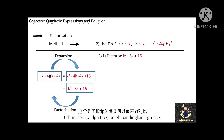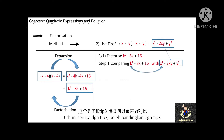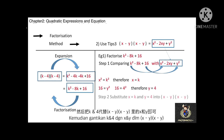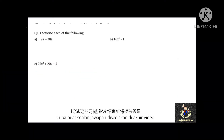Next, factorize k squared minus 8k plus 16. This algebraic expression is similar to Tips 3, so we use Tips 3 to perform the factorization. Doing the same comparison, we find x equals k and y equals 4. Substituting into (x minus y)(x minus y) gives (k minus 4)(k minus 4). You can now pause the video for 5 minutes and try this question. The answers are provided at the end of this video.